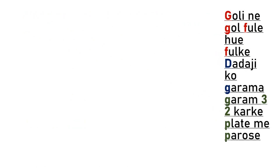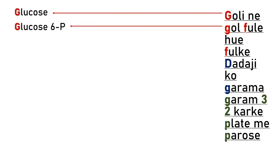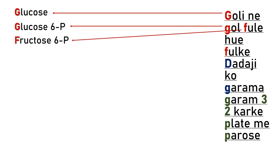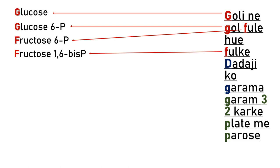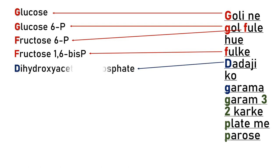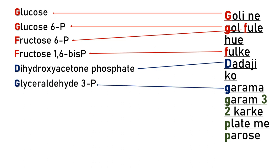The first G in the sentence indicates glucose; the next G indicates glucose-6-phosphate. The F indicates fructose-6-phosphate, and another F indicates fructose-1,6-bisphosphate. D stands for dihydroxyacetone phosphate, and G stands for glyceraldehyde-3-phosphate.